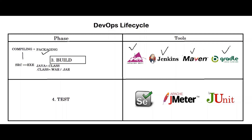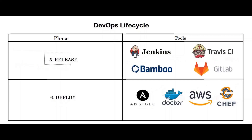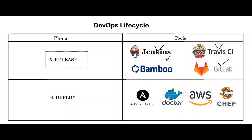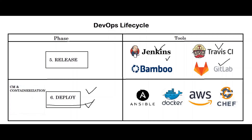The fourth phase of the DevOps lifecycle is testing. Testers write test cases using testing tools like Selenium, JMeter, or JUnit. Once the code is tested, it is released using continuous integration tools like Jenkins, Bamboo, Travis CI, and GitLab. Release means that your application is ready for deployment. Then comes the actual deployment phase, where you manage and maintain development and deployment of software systems and servers in any computational environment, using containerization and configuration management tools like Ansible, Docker, Chef, and AWS.